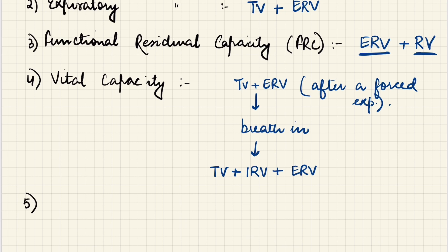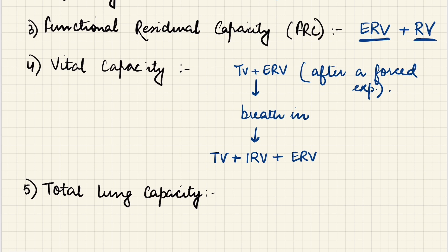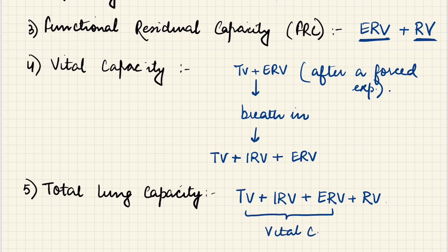The fifth capacity is the TLC, or total lung capacity — the total volume of air that can be accommodated in the lungs at the end of a forced inspiration. After a forced inspiration, the lung includes: the tidal volume, the inspiratory reserve volume, the expiratory reserve volume, and the residual volume which can never leave the lung. So total lung capacity equals vital capacity plus residual volume.